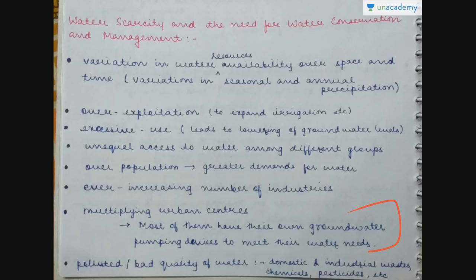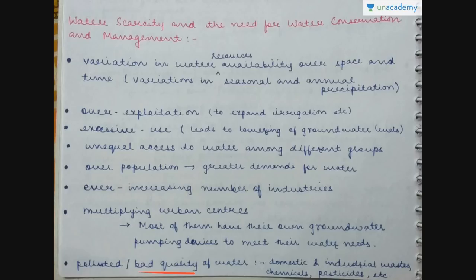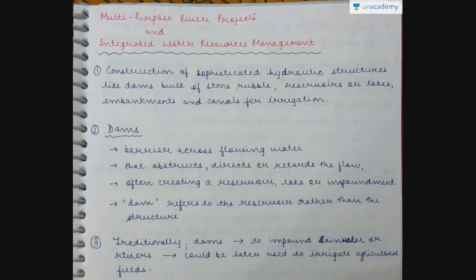Multiplying urban centers also contribute — most of them have their own groundwater pumping devices to meet water needs. As urban centers grow and population increases, pressure on water availability in a particular area increases. Another reason is pollution — even if water is available in sufficient quantity, there may be a problem of polluted water or bad quality water due to domestic and industrial waste, chemicals, or pesticides used.